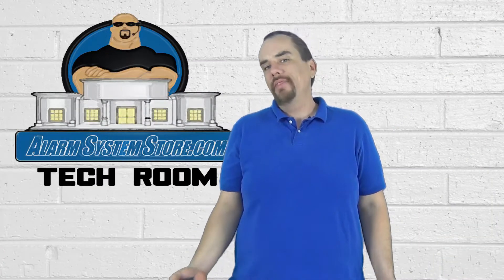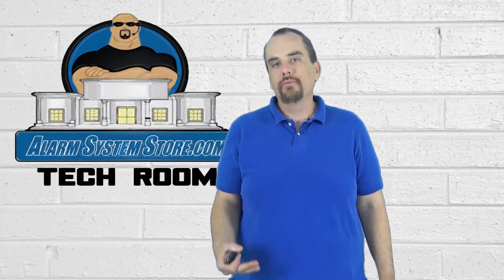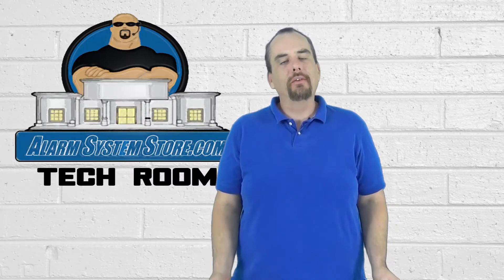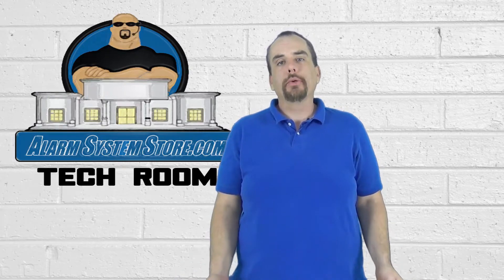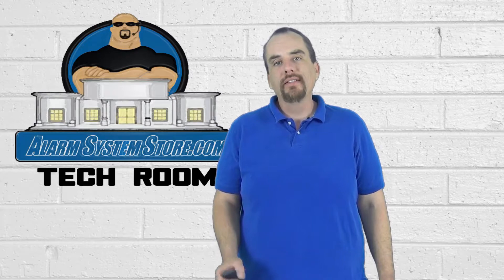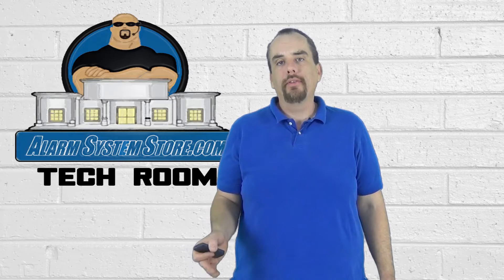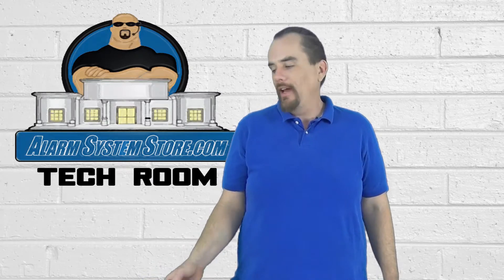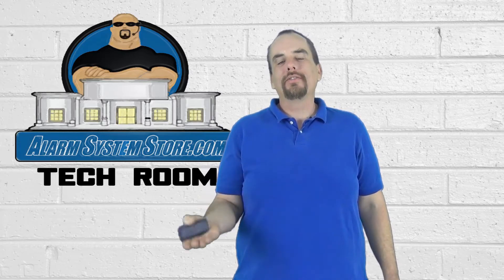Alright, I'm back. Now, that was pretty easy. The enrolling of this into the system is really simple, just like enrolling any other wireless device into an Alexor, Impassa, or Power Series. Now the mounting of this unit, you'll basically take it out by your driveway and mount it on a sturdy post or mount it with the spike that's included. I've got it laying over here.